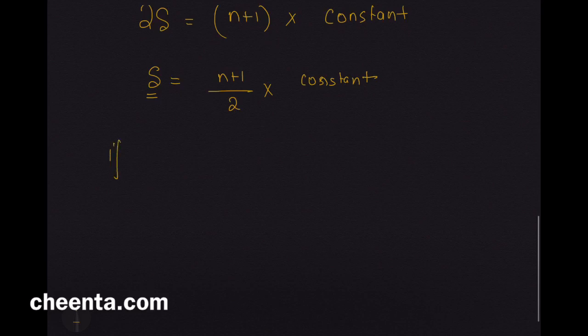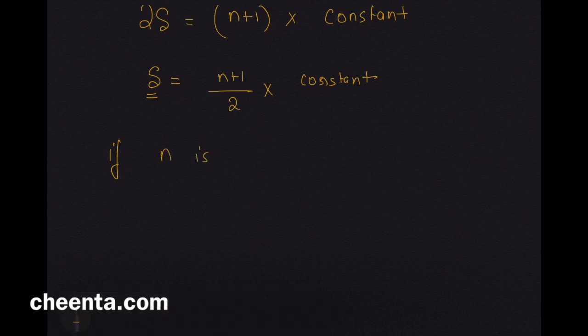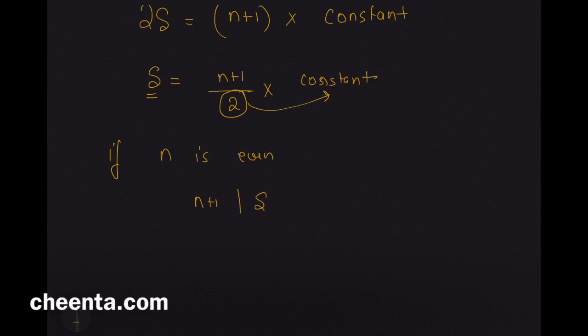If S is odd or rather it would more depend on, we can write it like this actually. If n is even, if n is even, then this division by 2 will go into this part and n plus 1 will divide S. Of course, 2 will not divide n plus 1. The left hand side is an integer. So, 2 must have divided this constant.